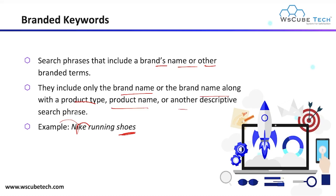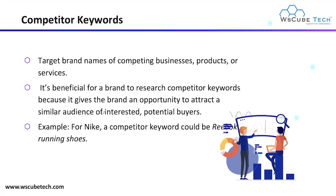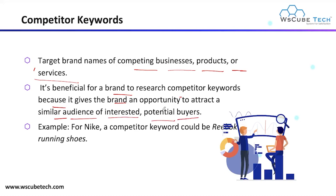Next we have competitor keywords. In this case, we target the brand name of a competing business's products or services. It's beneficial for a brand to research competitor keywords because it gives the brand an opportunity to attract a similar audience of interested potential buyers. For example, for Nike, the competitor is Reebok. So a keyword like 'Reebok running shoes' is a competitor keyword for Nike.